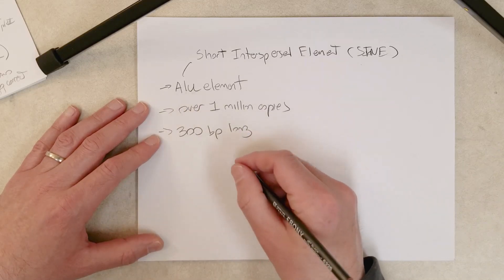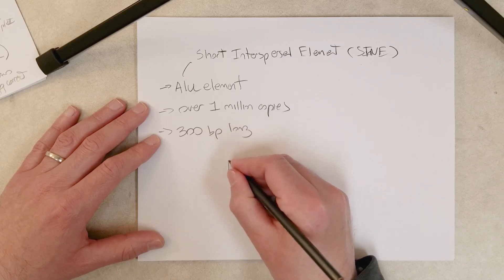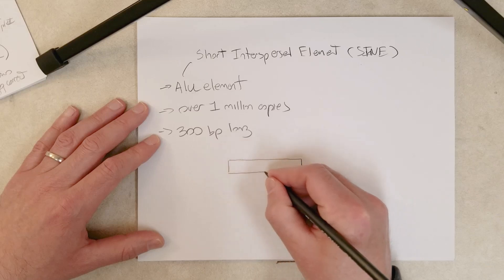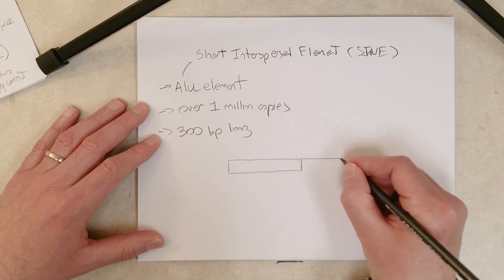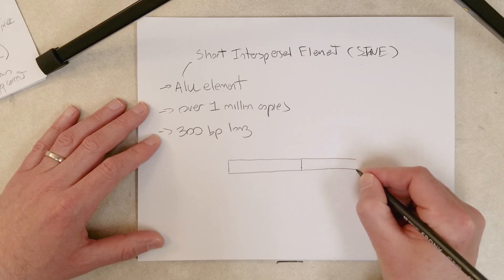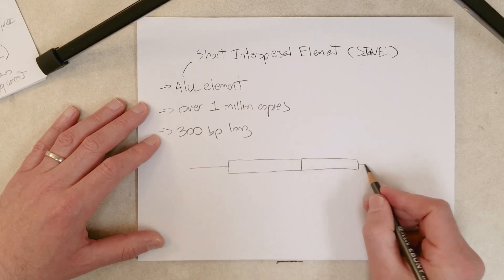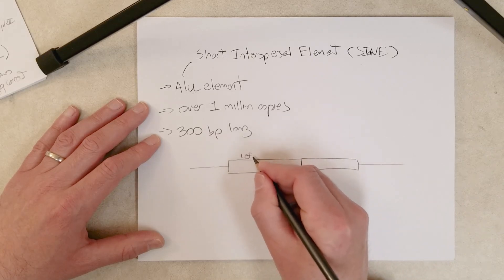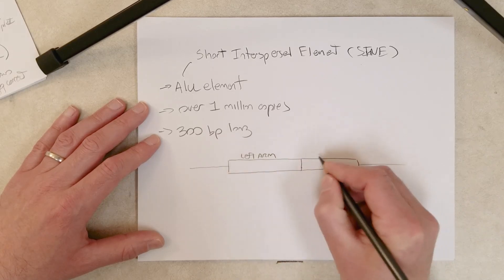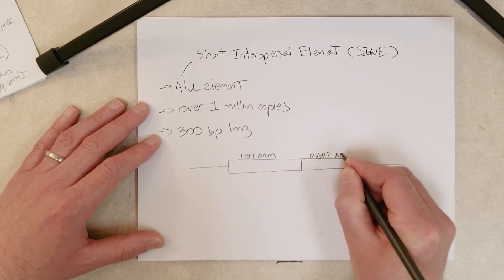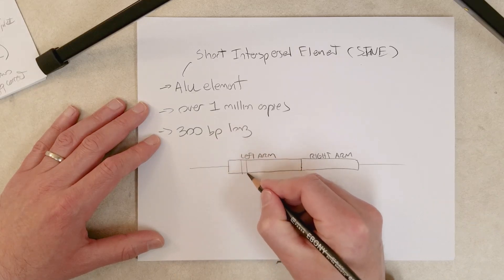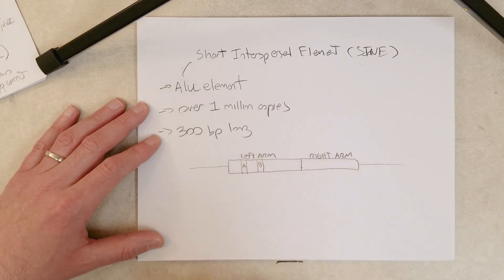The structure of ALU looks something like this. There are two arms, a left arm and a right arm. Let's say this is part of a chromosome, one single ALU element with two parts. The left arm and the right arm are very similar in sequence.